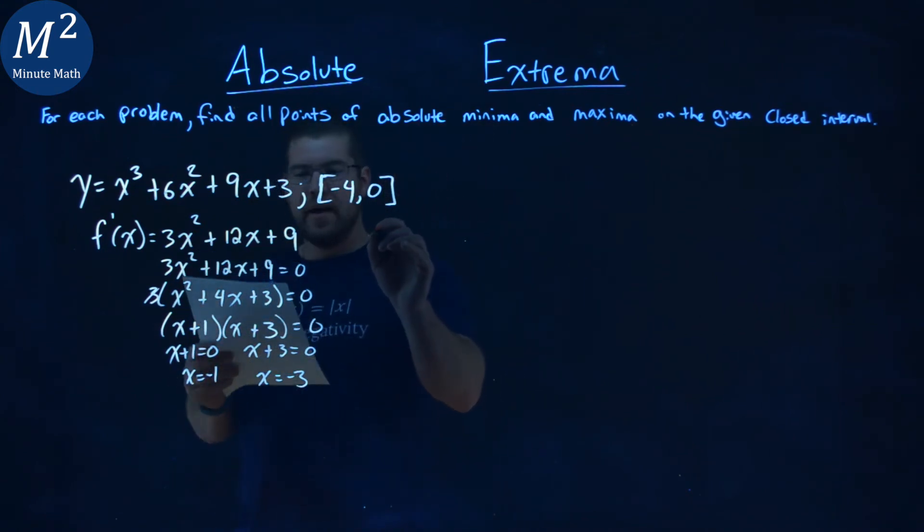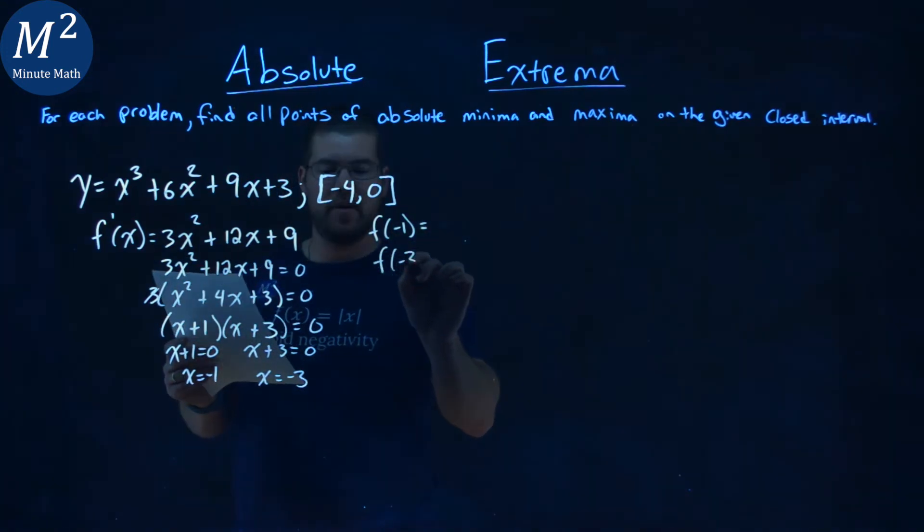So to do that, we have our f of negative 1, and what's the order? f of negative 3, I did it out of order here. f of negative 4, and f of 0.